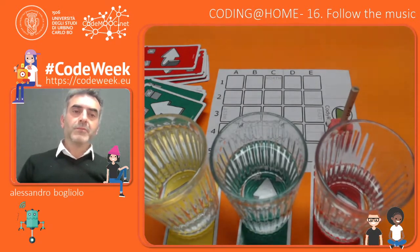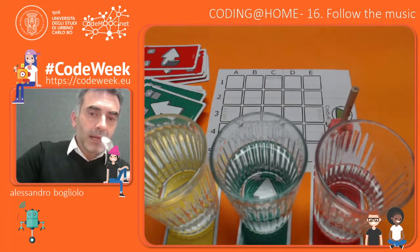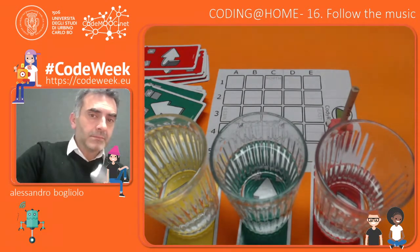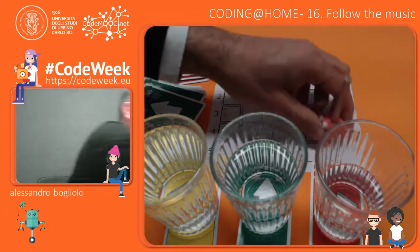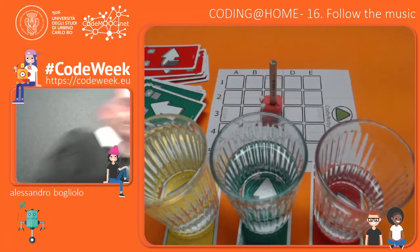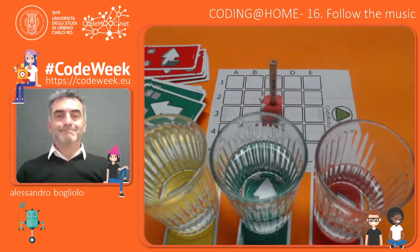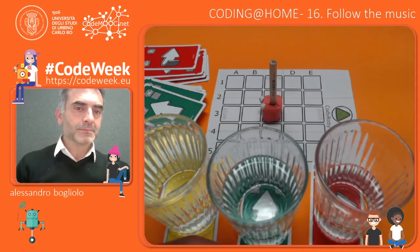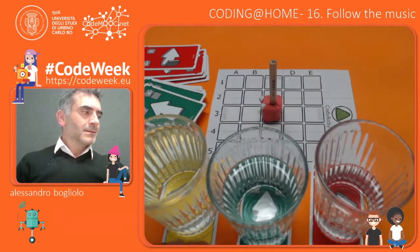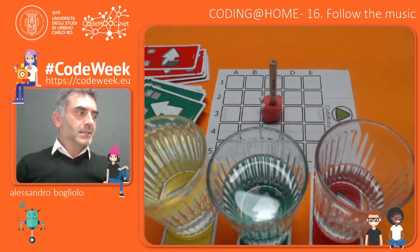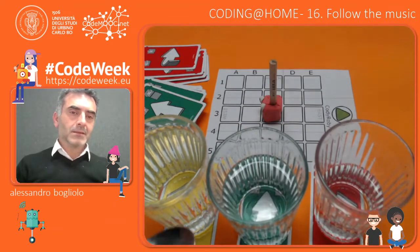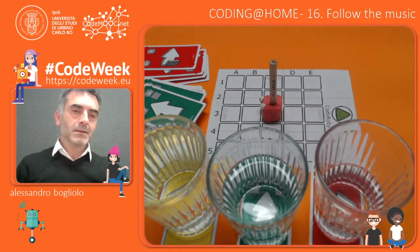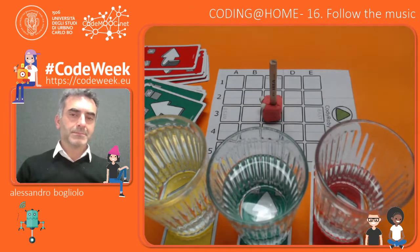Three different sounds. Using these sounds I can try to write a program. So: this is move forward, this is turn left, this is turn right.